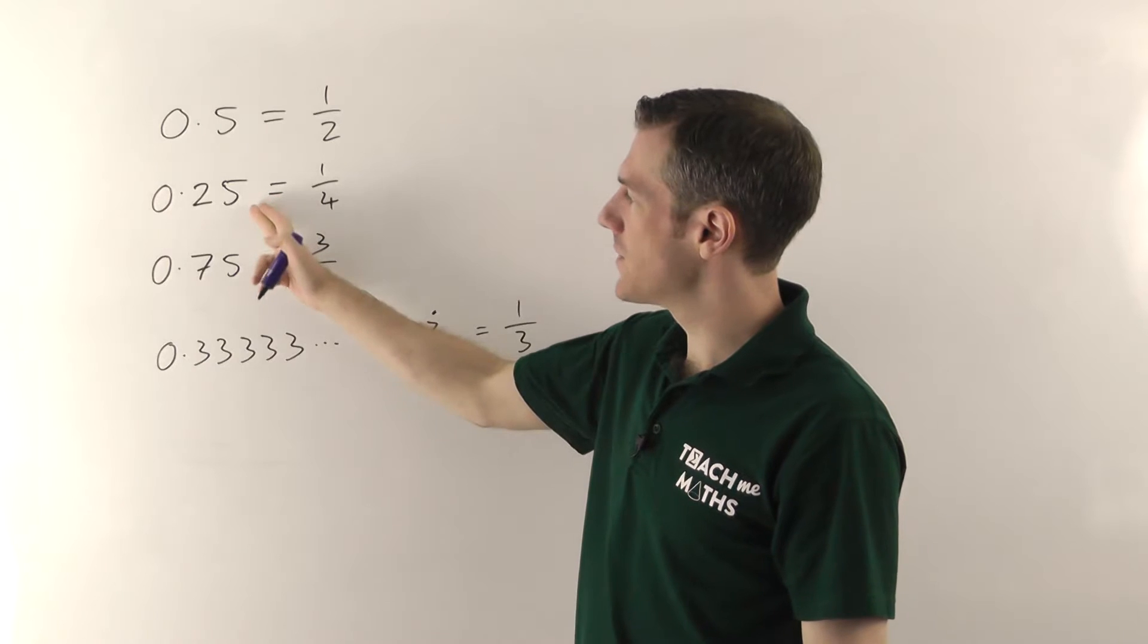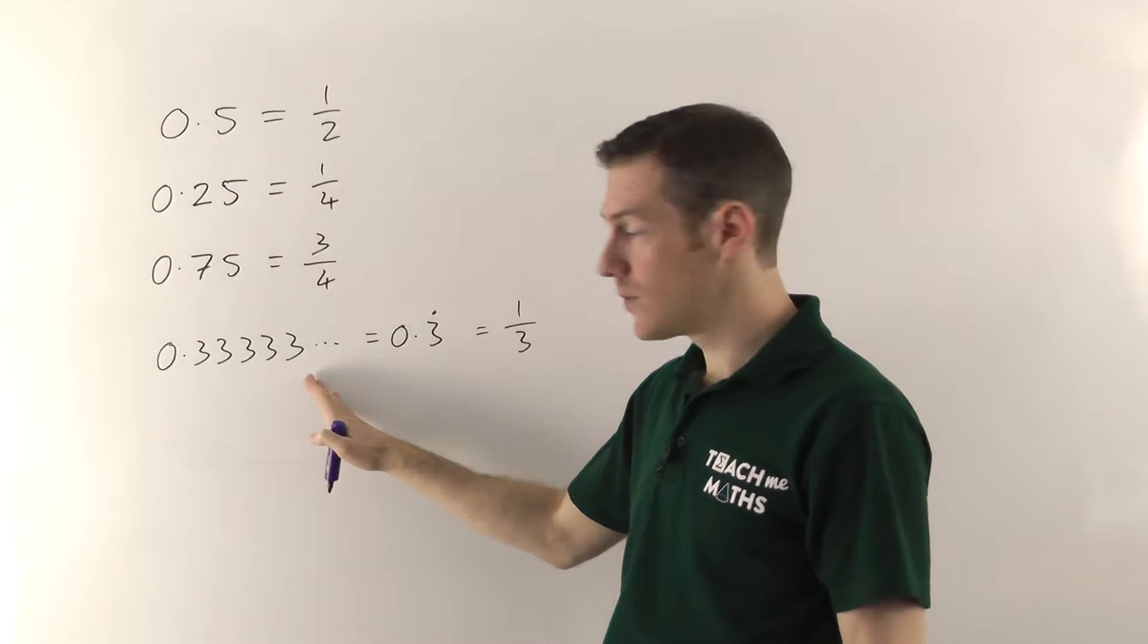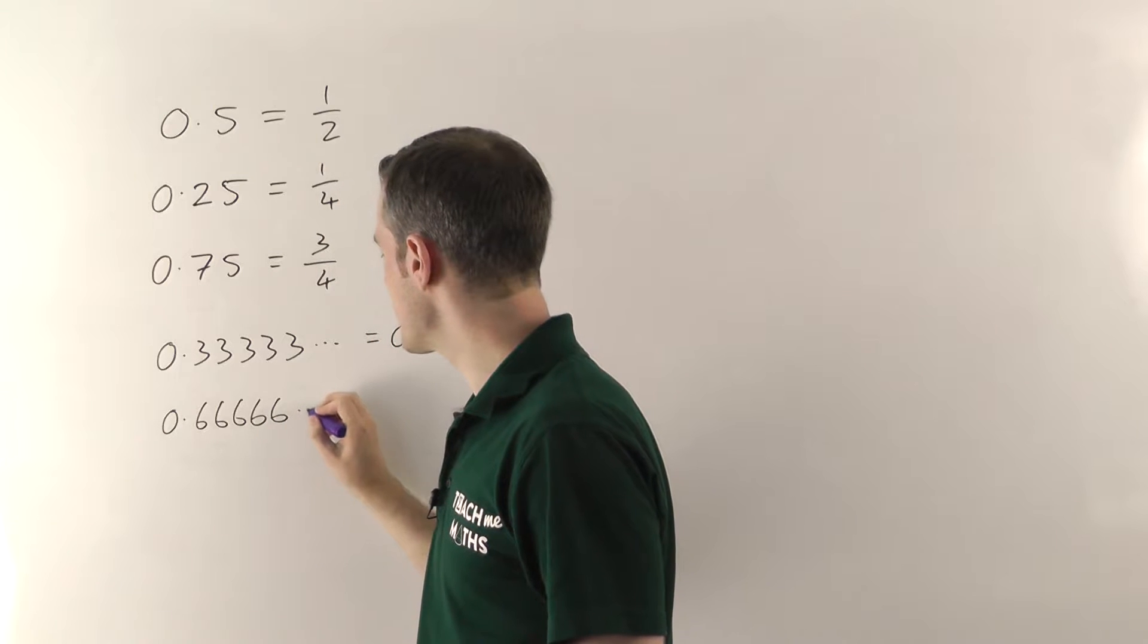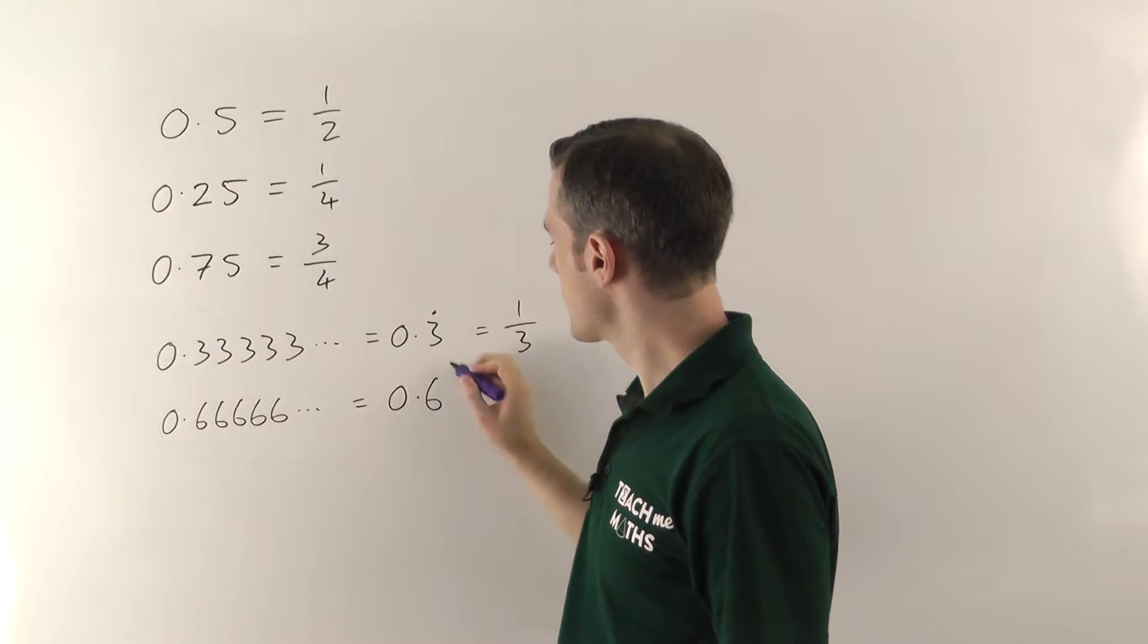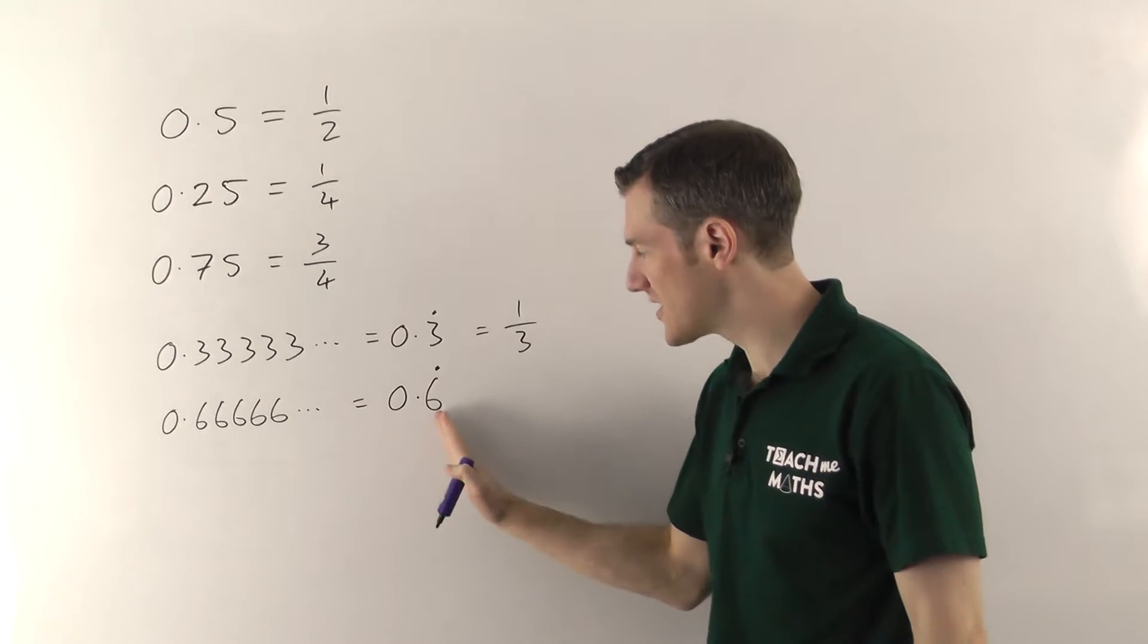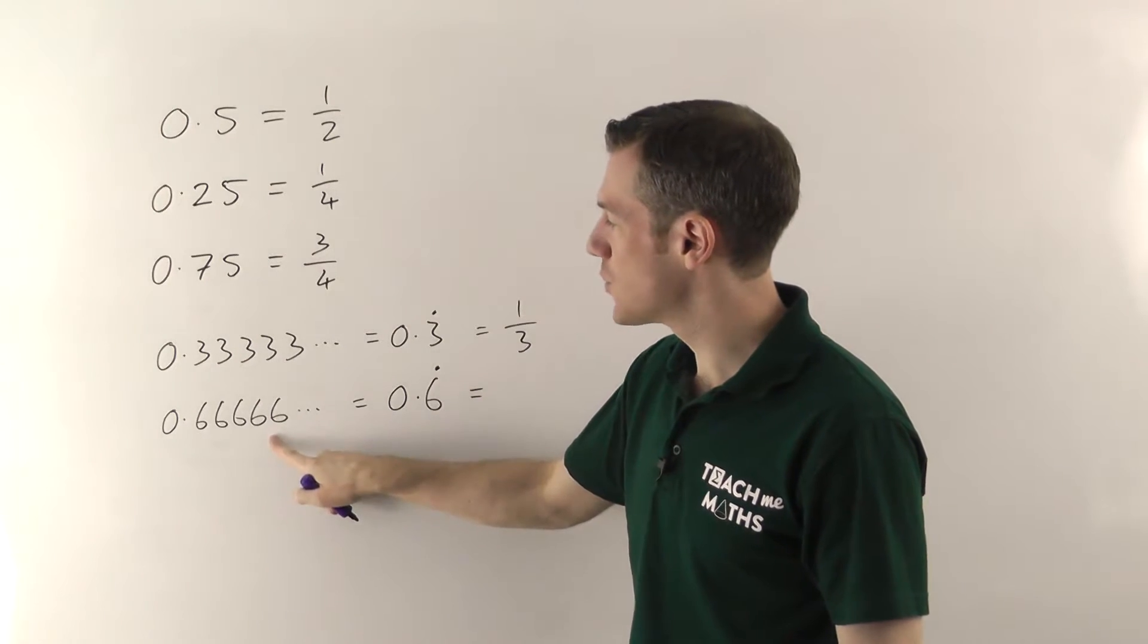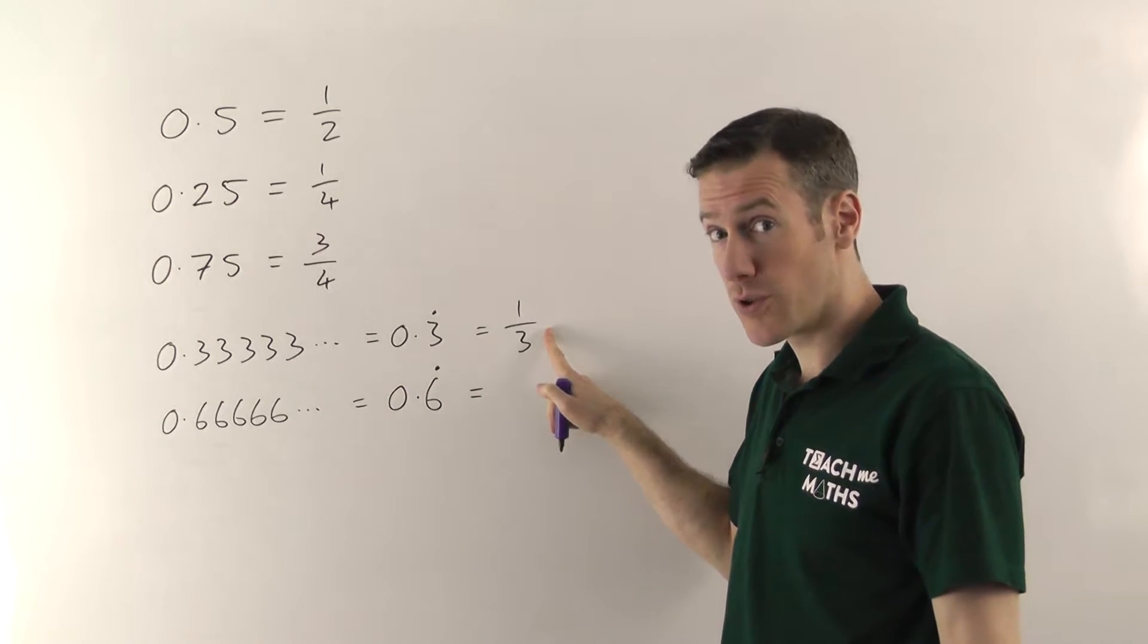Now, it's a bit like we did with the 0.25 and the 0.75, if we times this by 2, instead of 0.3333333, we're going to get 0.666666, so lots of 6's going on forever. And again, if you write that in the recurring form, you just stick a dot above the 6. So this means 0.6, where the 6's then go on forever. And as a fraction, well, this is twice as big as this, so this fraction is going to be twice as big as this, so it's going to be 2 thirds.